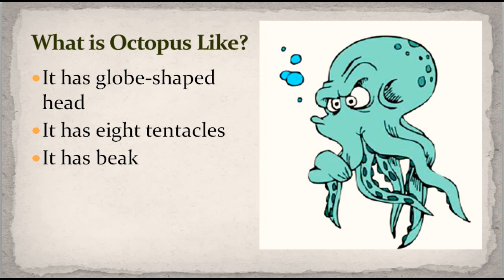What is octopus like? Like a jellyfish, it has tentacles, but it has only eight tentacles. It has a globe-shaped head — kepalanya berbentuk seperti globe, atau bola dunia. It has a beak — memiliki paruh.